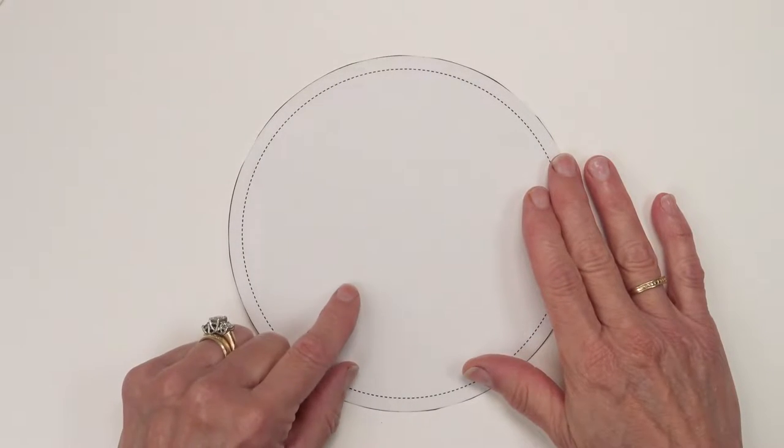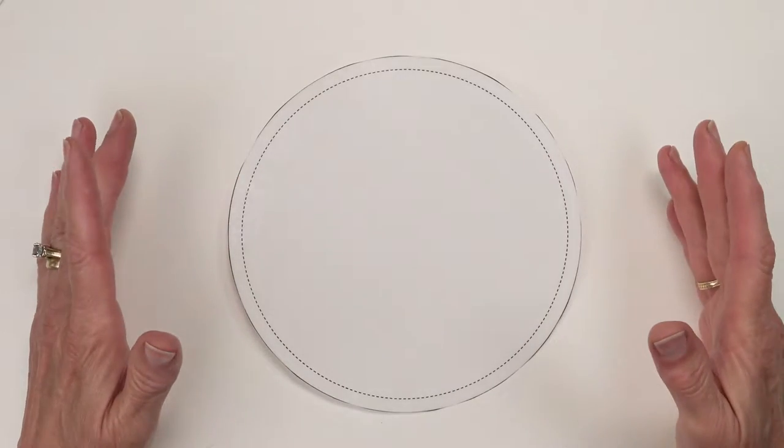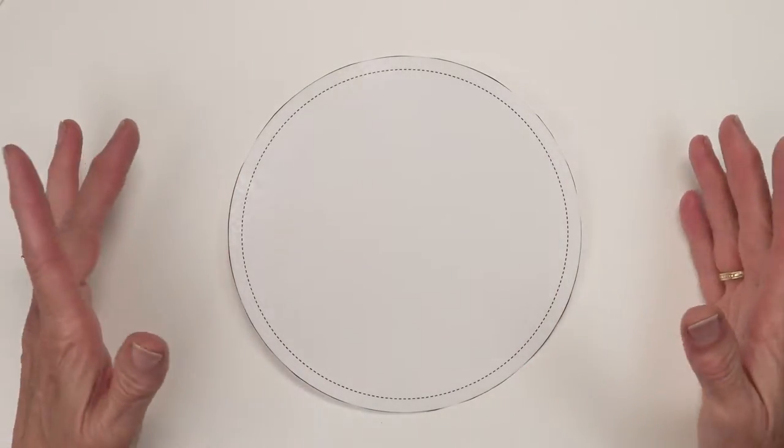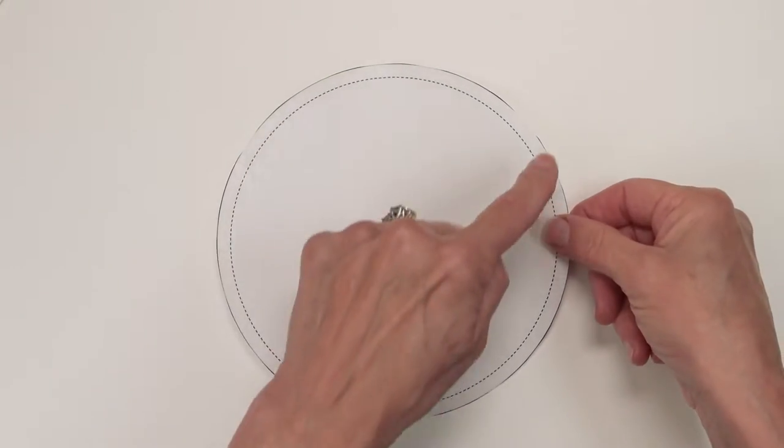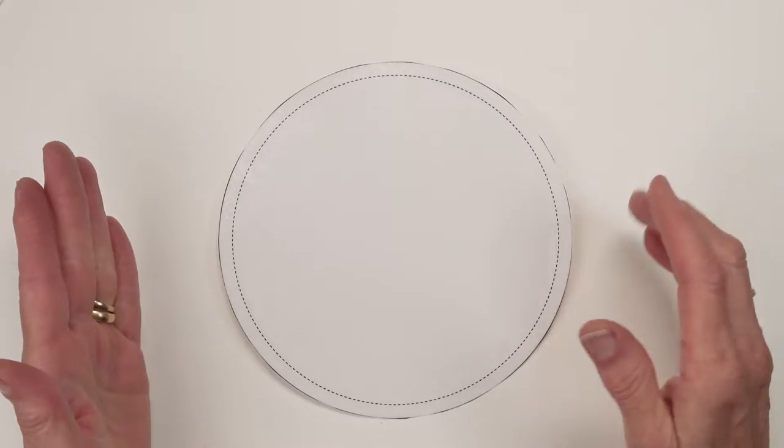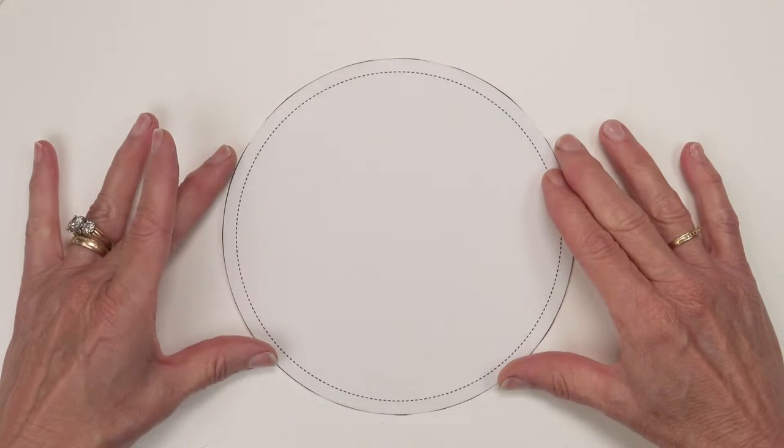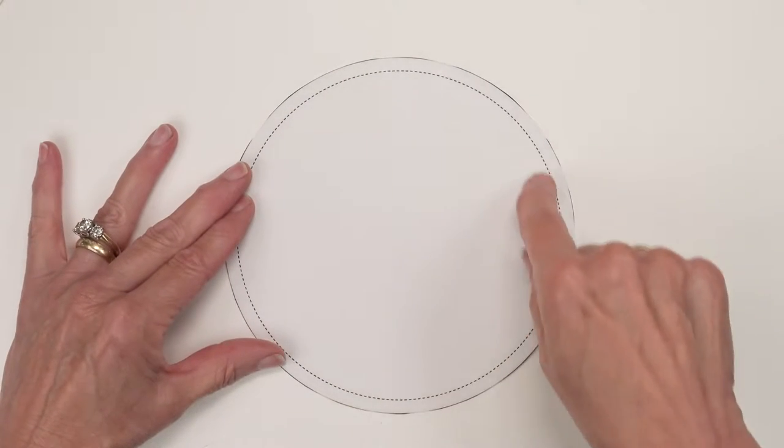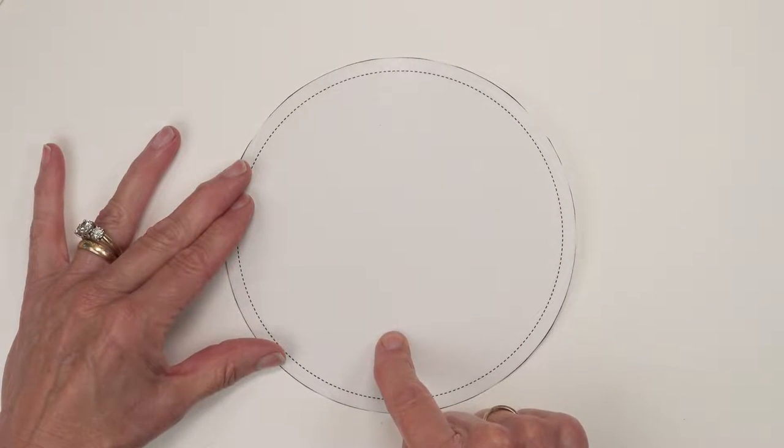Go to my website and download the free pattern for the drawstring bag and make a template for the circle. This circle is six and a half inches including the seam allowance. It will have a six inch finished base.